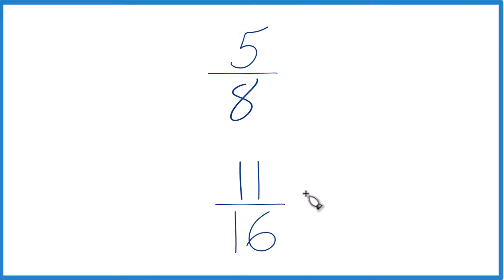The other way is to find a common denominator. So here we have 8 and 16. And if we had the same denominator, we could just compare the numerators.